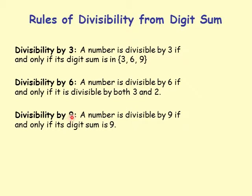Divisibility by 9: a number is divisible by 9 if and only if its digit sum is 9. That's the magic thing we talked about — if digit sum is 9, that number is divisible by 9.